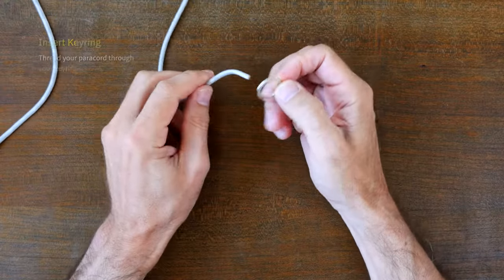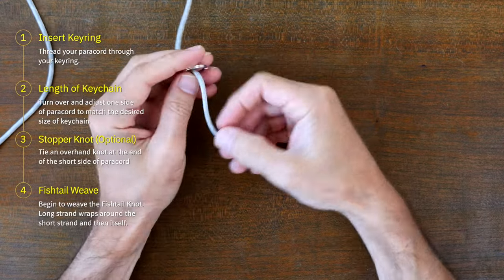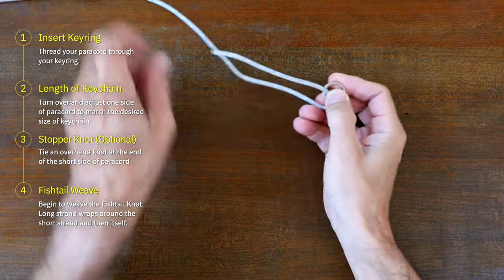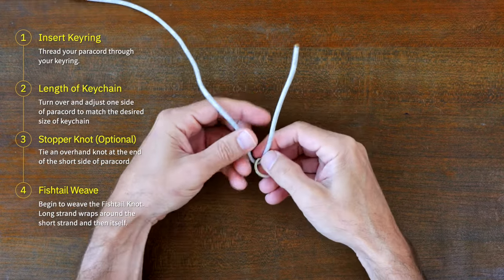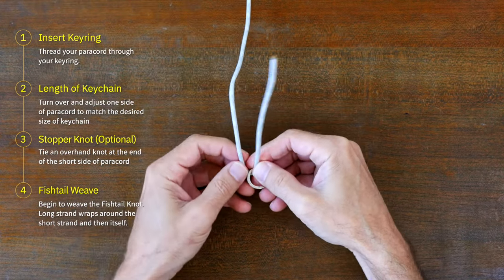Begin by passing your paracord through the key ring. Then find the length of the keychain you'd like to create and shorten one side of your paracord to reflect that length.